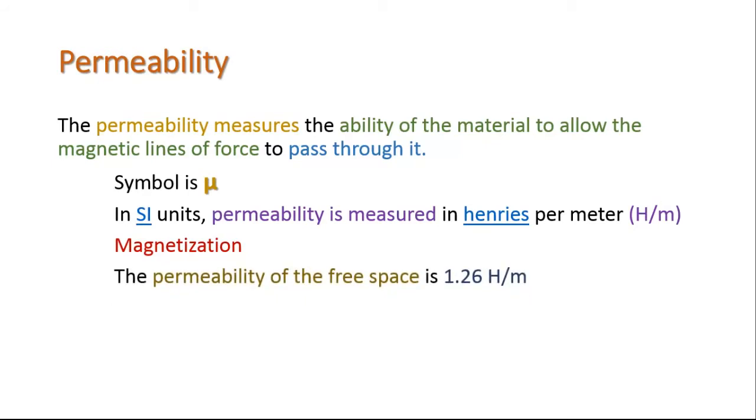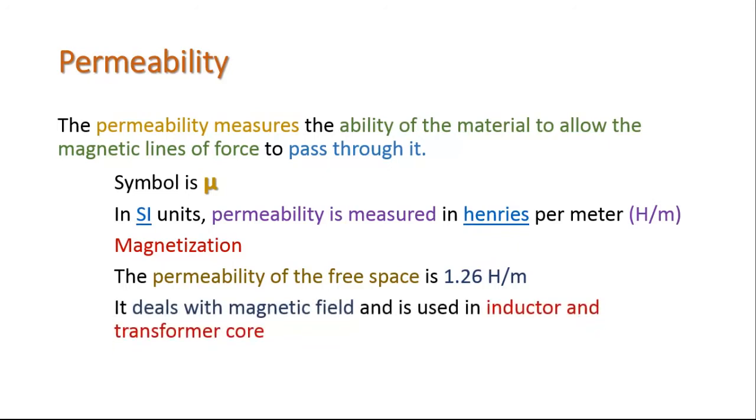The permeability of free space is 1.26 henry per meter. Permeability deals with magnetic field and is used in inductor and transformer core.